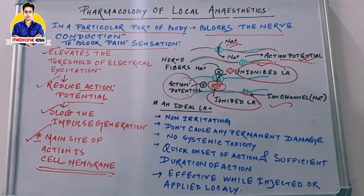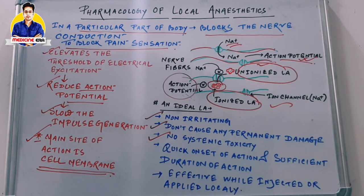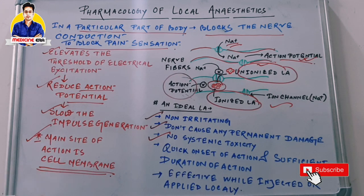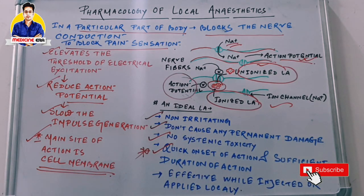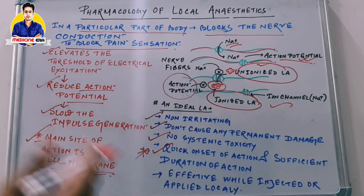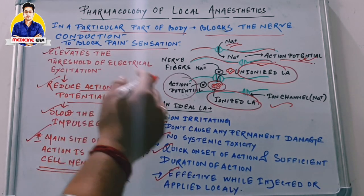An ideal local anesthetic should be non-irritating — it should not cause any irritation to cell membranes or tissues. It should not cause any permanent damage to nerve fibers or cells where it is injected or topically administered. It should have no systemic toxicity in the blood. Importantly, it should have a quick onset of action and sufficient duration of action so that surgery can be completed successfully. It should also be effective when injected or applied locally.